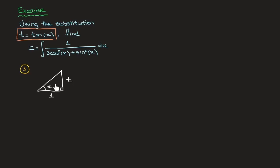Since tan of x equals opposite over adjacent, we quickly see that tan of x equals t over 1, which equals t — exactly what we needed. Now we come up with expressions for both cosine and sine in terms of t, and for that we need to find the hypotenuse. Using Pythagoras' theorem, the hypotenuse is the square root of 1 squared plus t squared, which we write as the square root of 1 plus t squared.